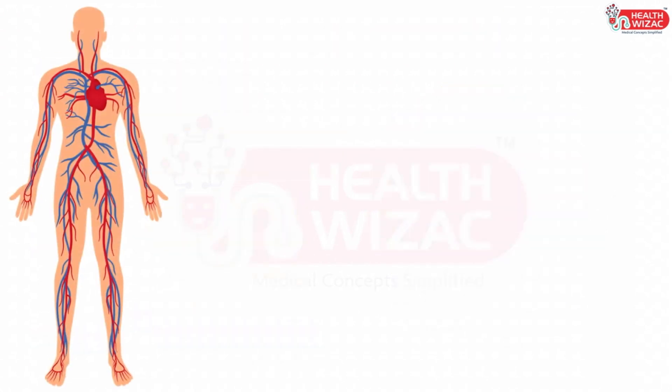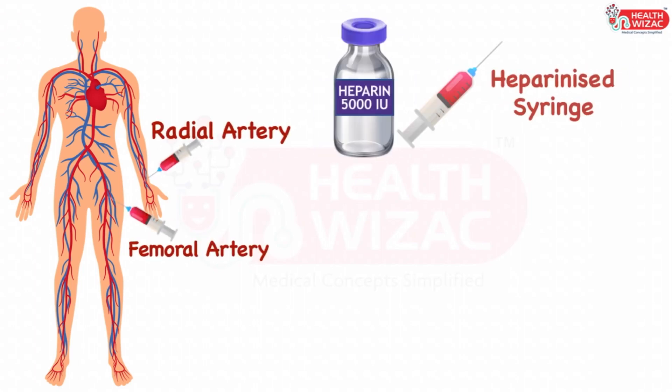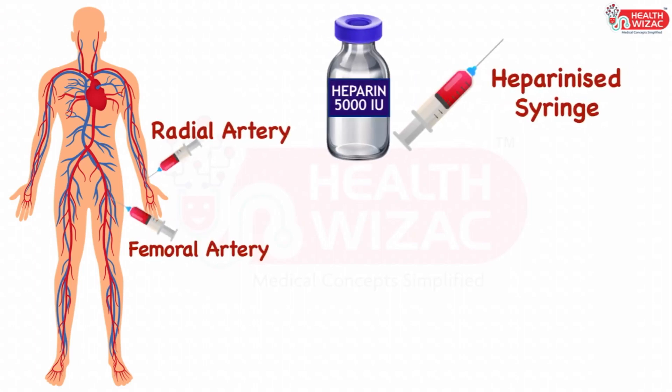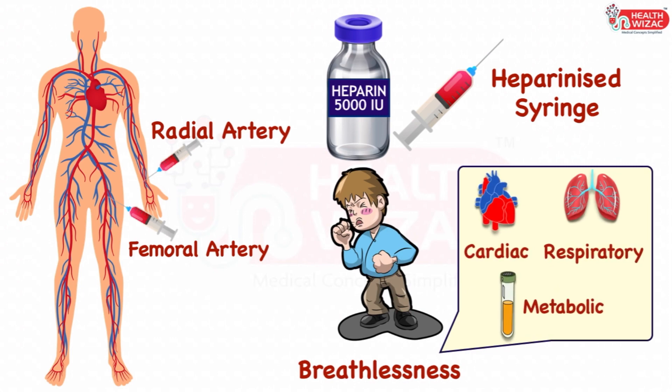Arterial blood gas or ABG is usually collected through the radial or femoral artery in a heparinized syringe, and is usually performed in patients presenting with breathlessness either due to respiratory, cardiogenic, or metabolic cause.